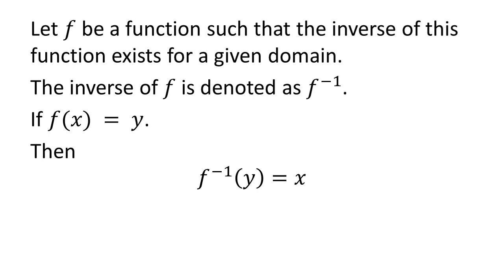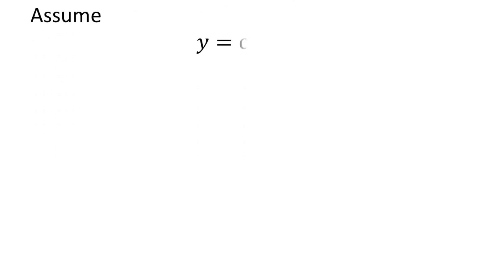We will apply the above properties to solve cosine of arccotangent of x. To find the value, let's assume y equals arccotangent of x. Since arccotangent is the inverse of cotangent, it follows that cotangent of y equals x.